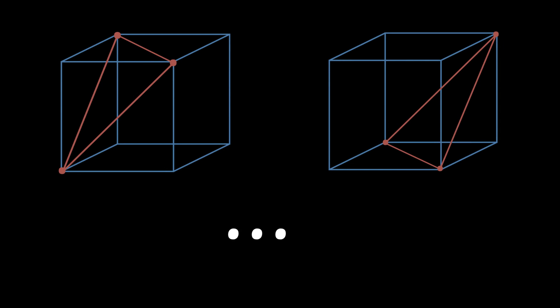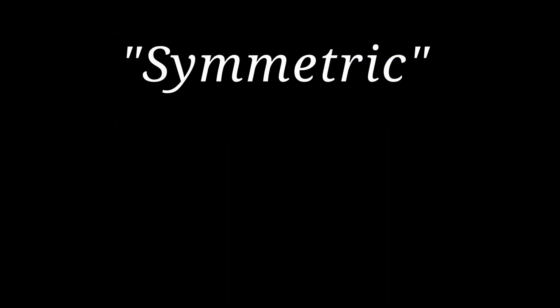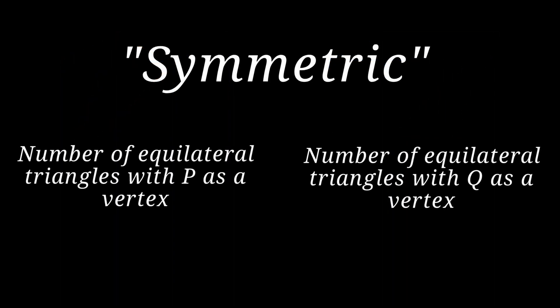Now let's count the number of triangles. Notice that all the vertices of an n-dimensional cube are symmetric with respect to each other. What I mean by that is, if you take any two vertices of the cube, say p and q, the number of equilateral triangles with p as a vertex is the same as the number of equilateral triangles with q as a vertex.